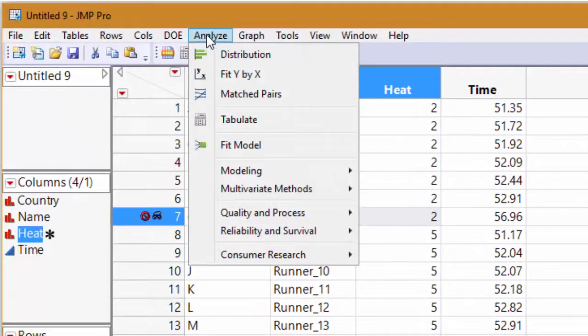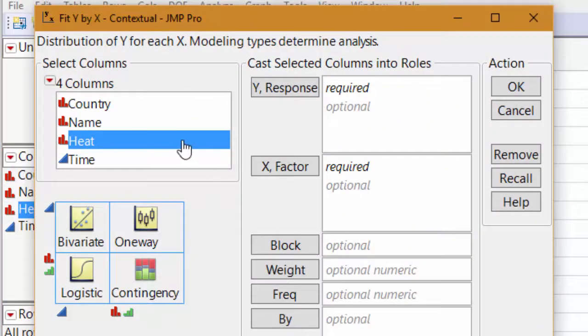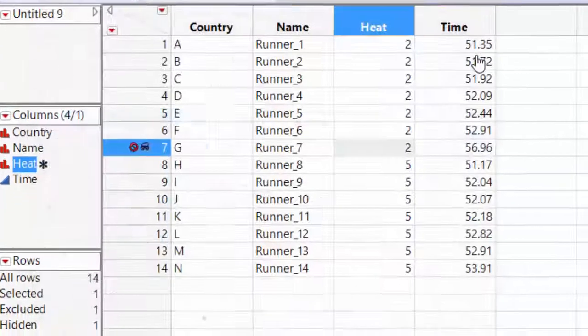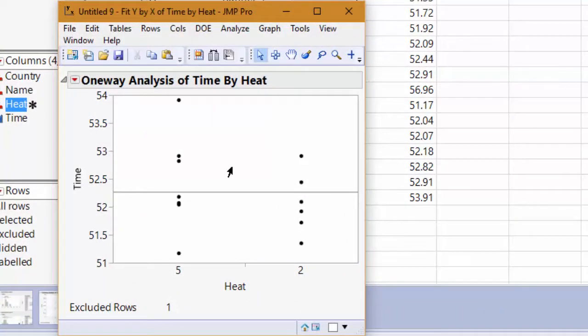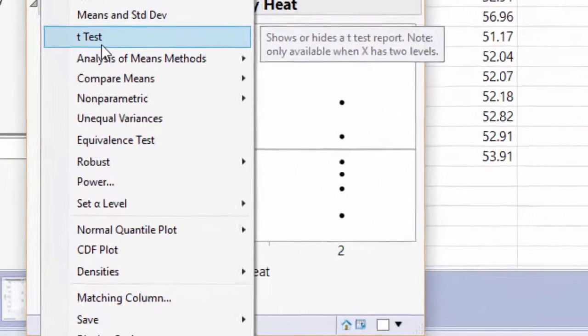Now let's go to analyze and go to fit y by x. Under analyze fit y by x, we want to see if heat can explain somebody's time. The x variable is the one that will go on the x-axis and the time variable will be on the y-axis. So let's see right here our data. We can click back inside, which makes all the points come back and brighten to life. Now let's go ahead and run our two-sample t-test. Go to the red arrow right here and click on t-test.